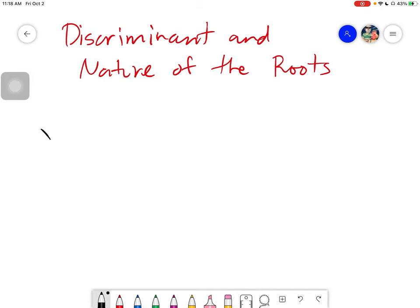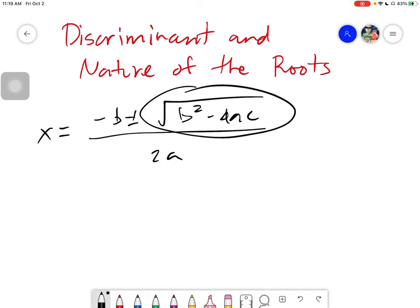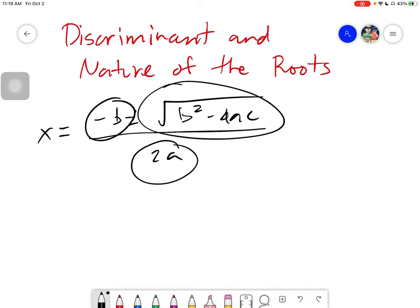So firstly, in any given quadratic formula which is negative b plus minus the square root of b squared minus 4ac divided by 2a, this is the part that determines whether your roots exist or not. So basically, roots is the answer for x. On this part, this one, here we determine the nature of the roots. Why? Because this one is a real number and also a real number. But the square root will provide a different case whenever the number inside is negative or positive.